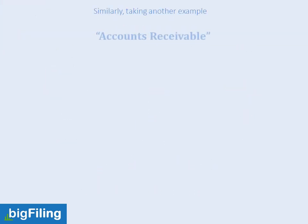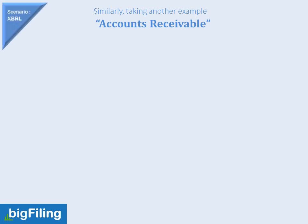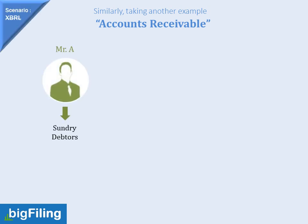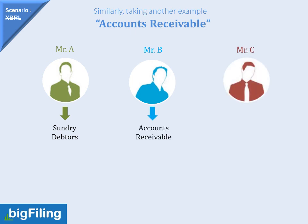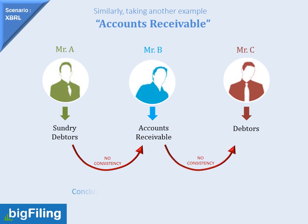We will take another example of accounts receivable. Scenario is before XBRL. Mr. A has named it as 'sundry debtors,' Mr. B as 'account receivable,' and Mr. C as 'debtors.' Again there is no consistency in the name given by these three professionals, so comparison is again not possible.